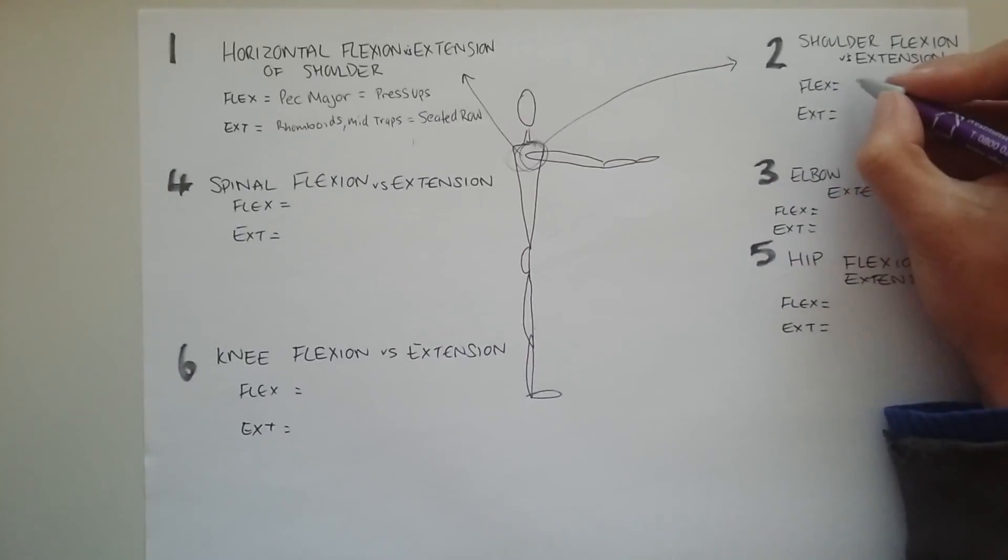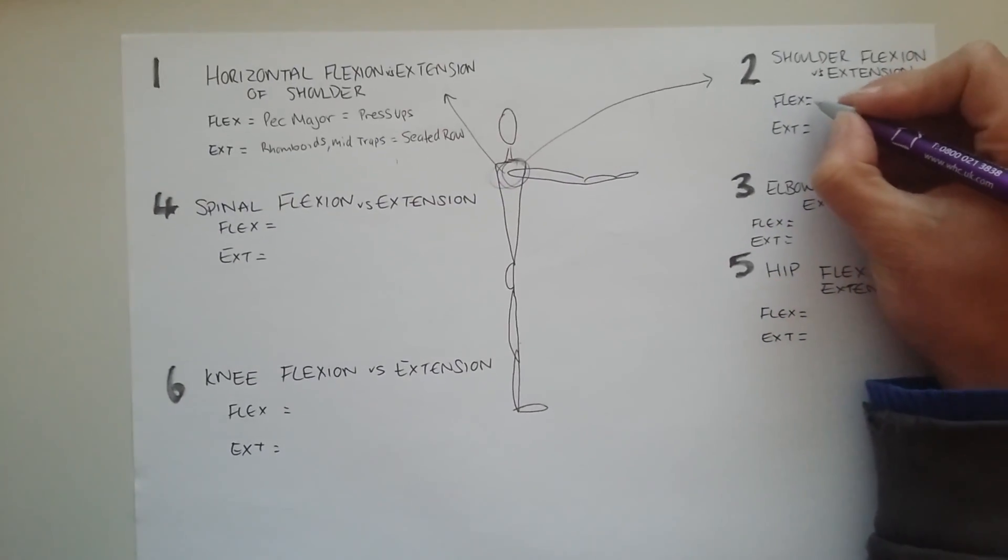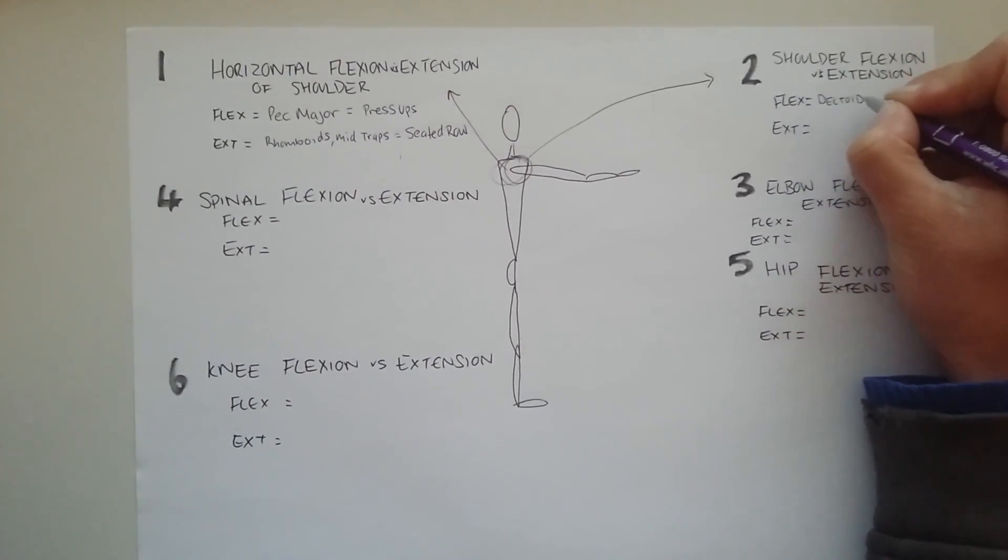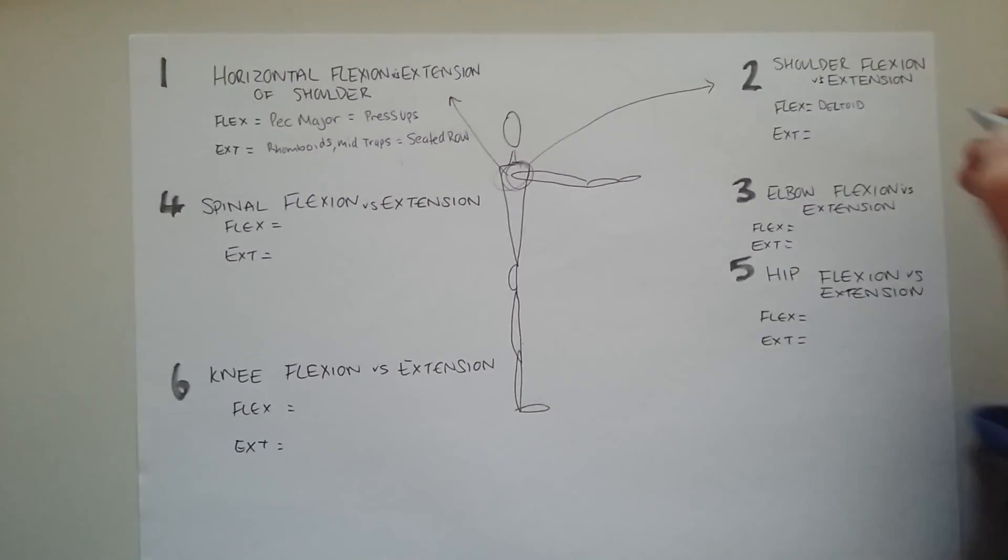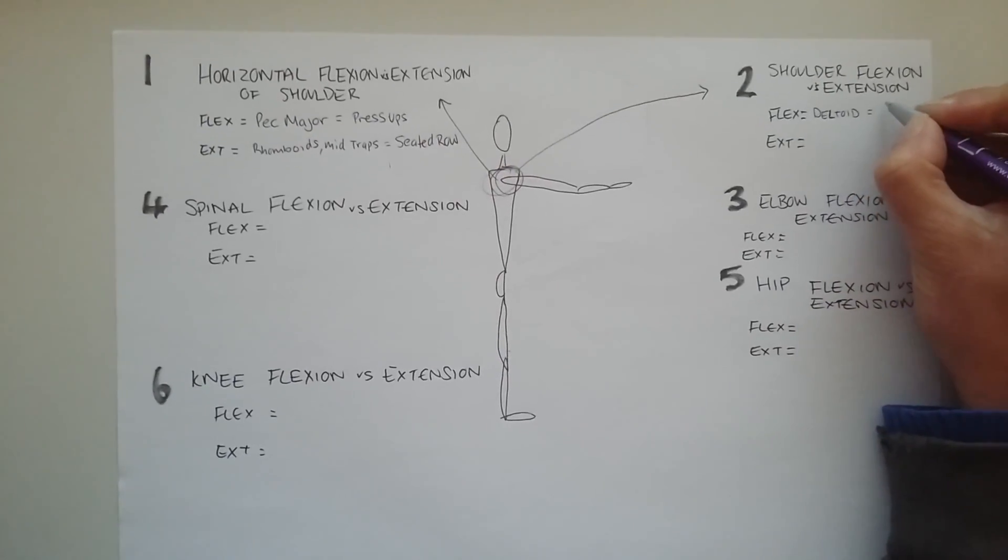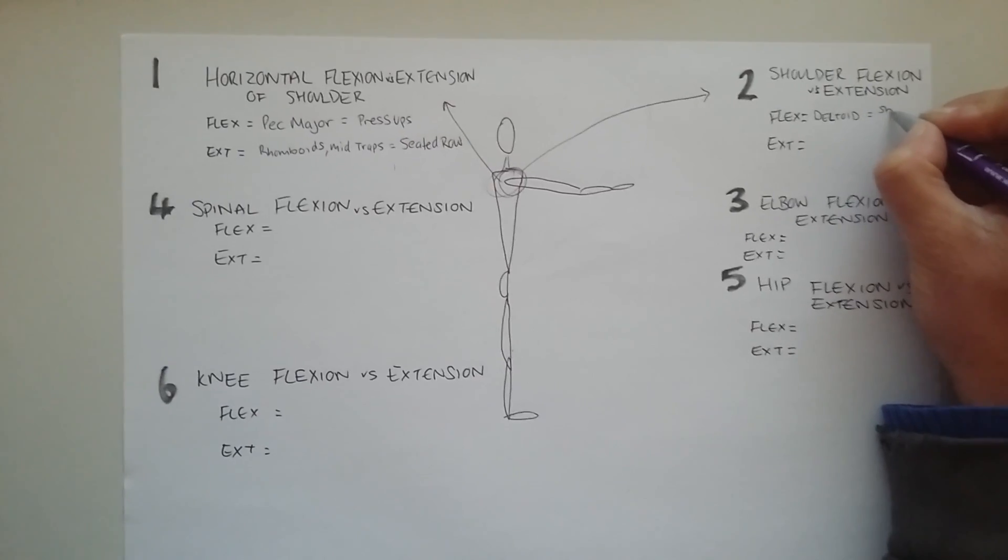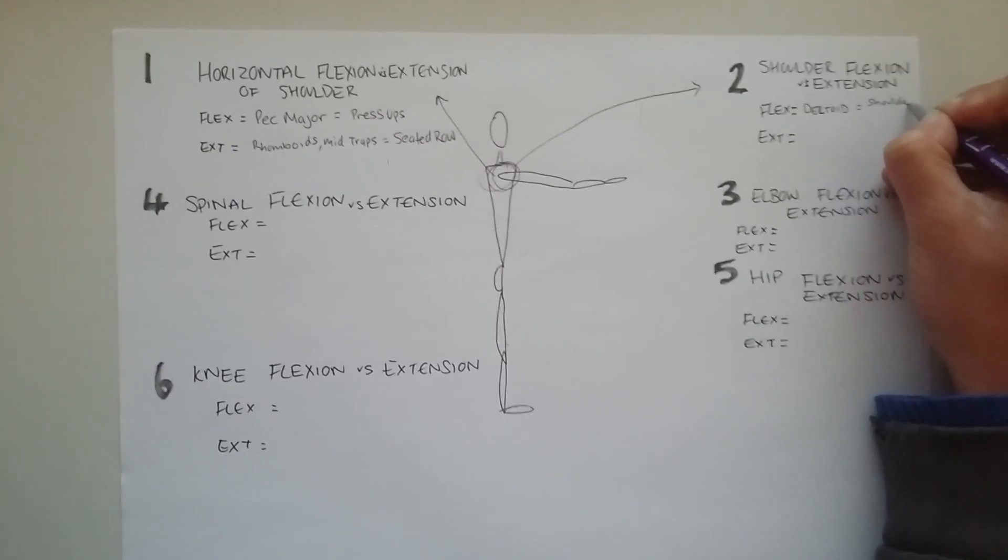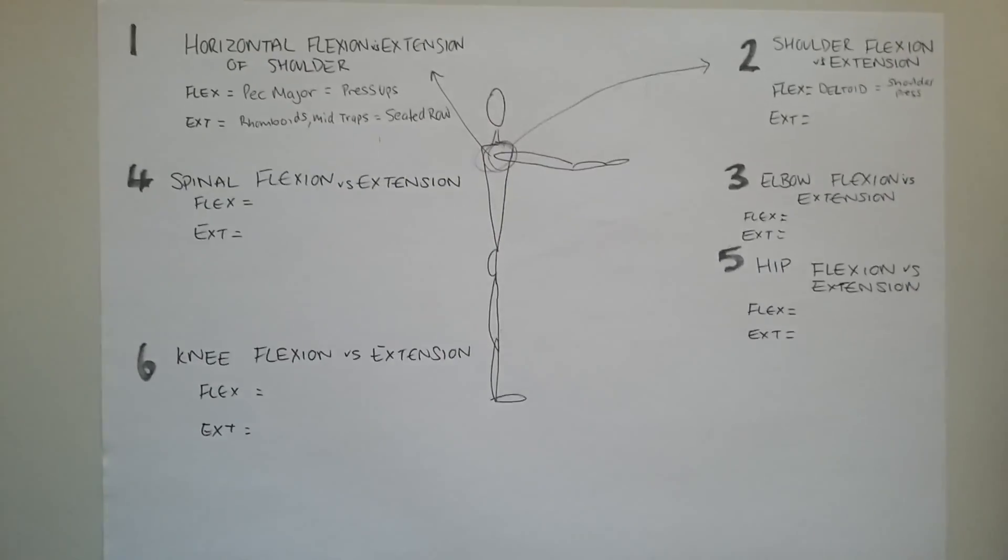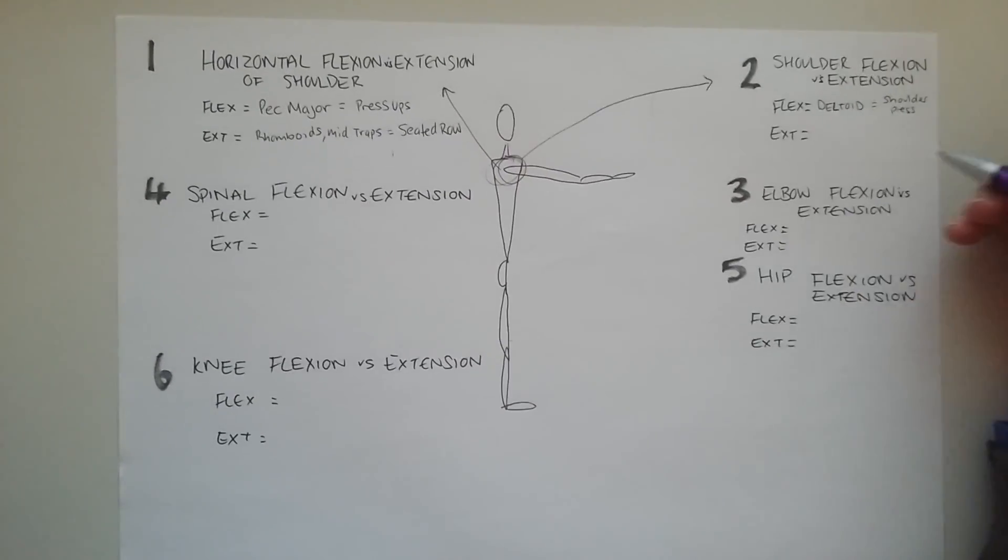Now an example of this is going to be anything that works the deltoids really. So a deltoid is your flexion muscle, the muscle that flexes your shoulder. Now that deltoid, I'm going to put down shoulder press as a good example of that. You could also have frontal raise, you could have lateral raise, all of these are shoulder flexion.